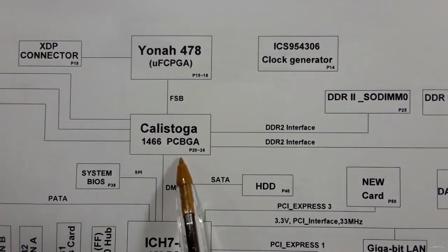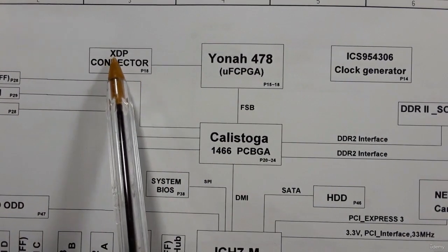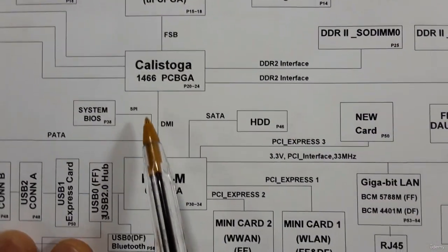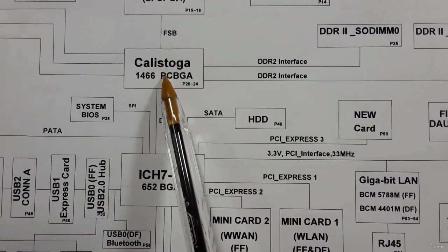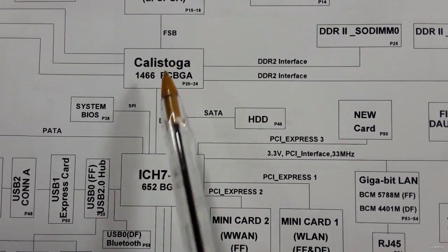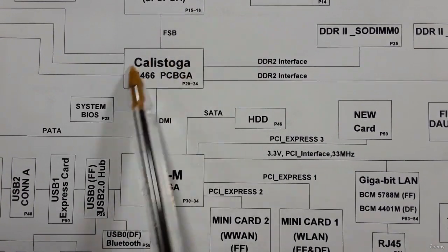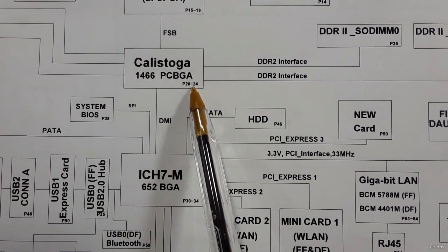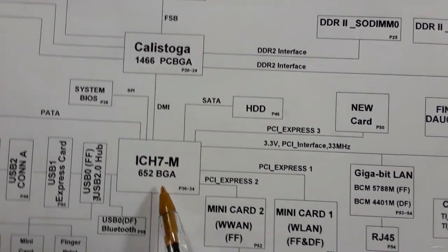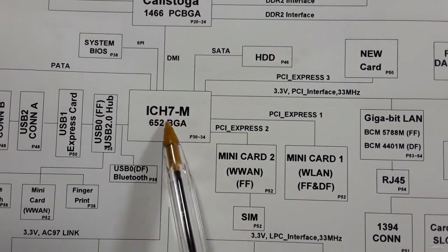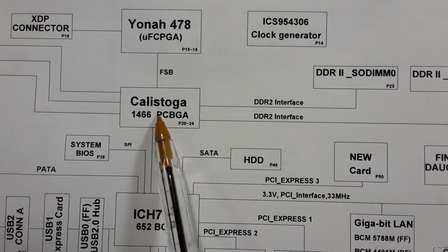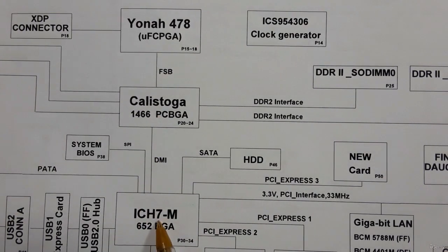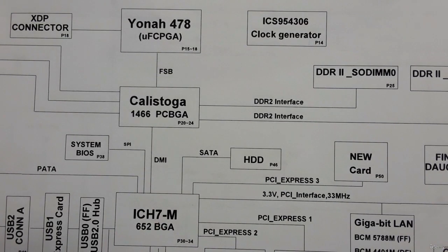Here we have the XTP connector, and here we have the GMCH — this is the 1466 GMCH covered in pages 20 to 24. We also have the ICH, or south bridge. The GMCH is the north bridge and the ICH is the south bridge.